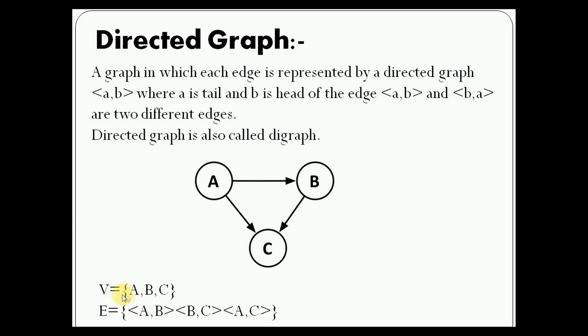Here V equals A, B, C. There are three vertices A, B, C and the directed edges are A to B, B to C, and A to C. This is a directed graph in which the direction is specified.